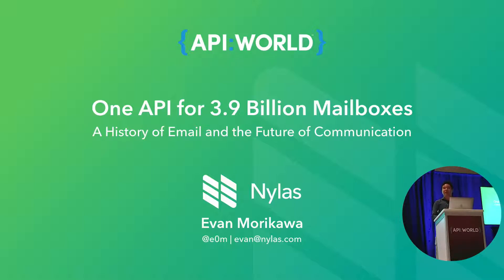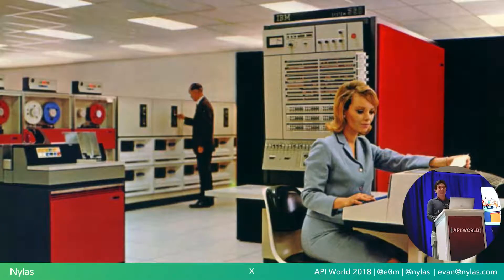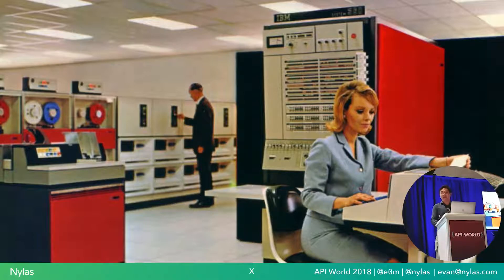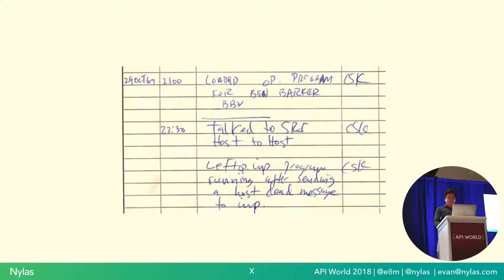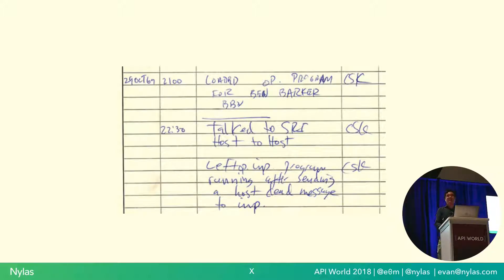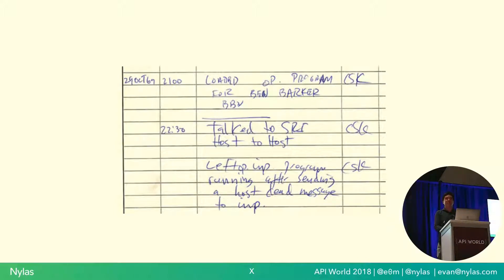To start us off, I'm going to take us all the way back to 1969. We had just gone to the moon. It is October 28th at 10:30 PM Pacific Standard Time — not cold because we're in Los Angeles. Charlie Klein had just sent from his STS Sigma-7 the world's first message across the ARPANET to an STS 940 in Stanford. The contents of that message? Login. This was the very first time we had this distributed means of communication, at first between two computers, and then many more.